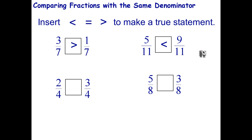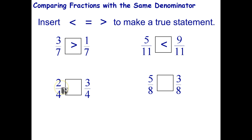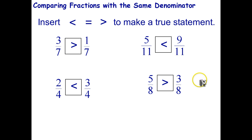If you divide your pizza into quarters, three-quarters is more pizza than two-quarters. So two-quarters is smaller than three-quarters. And finally, five-eighths is bigger than three-eighths.